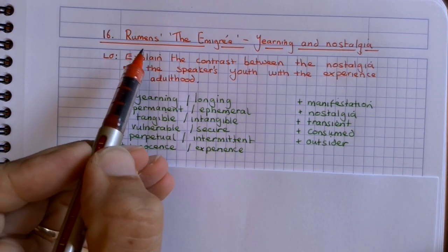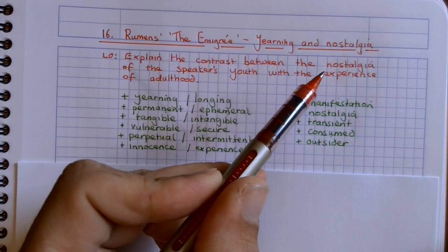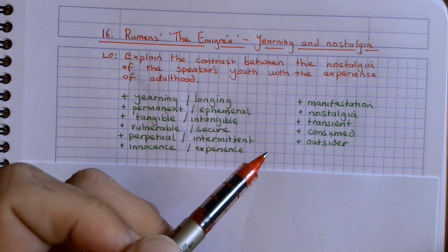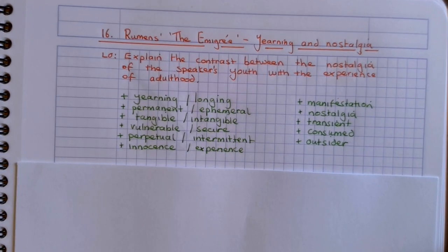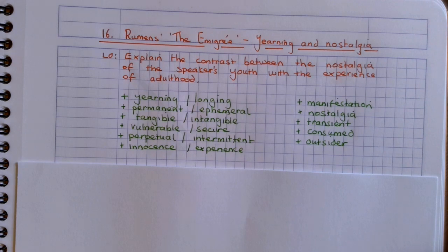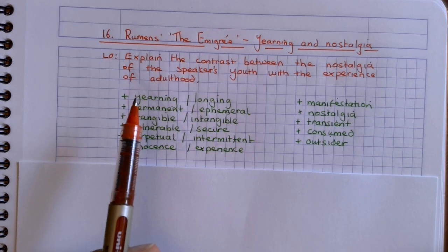We're going to look at Rumens as the émigré and the kind of yearning and nostalgia that is present in the first part of this poem. Our learning objective today: we're going to explain the contrast between the nostalgia of the speaker's youth when they were younger, thinking about the city that they were in and the place that they were from, with the experience of adulthood and how the memory of that place changes.